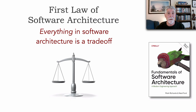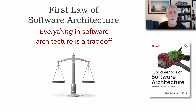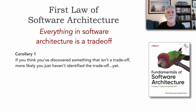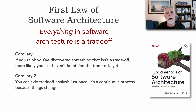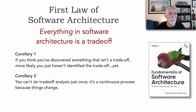As you'll remember from the first edition, the first law of software architecture is that everything in software architecture is a trade-off. In that new chapter, we give a lot of examples of why this is a law. In the first edition, we had our first corollary: if you think you've discovered something that isn't a trade-off, it just means you haven't identified the trade-off yet. We added a second corollary in the second edition: you can't do trade-off analysis just once — it's a continuous process because things change.